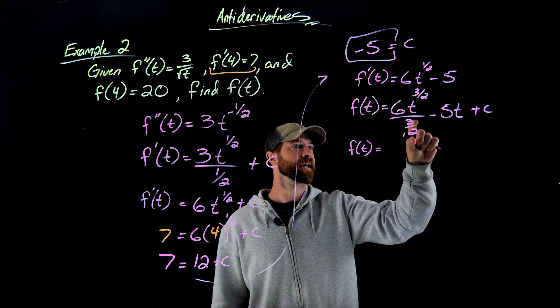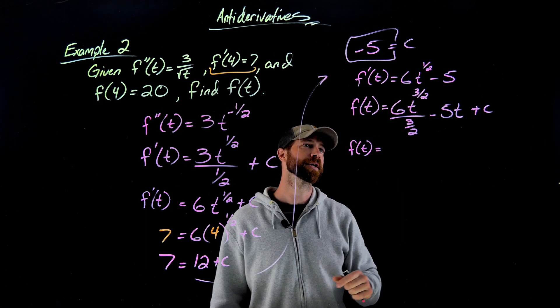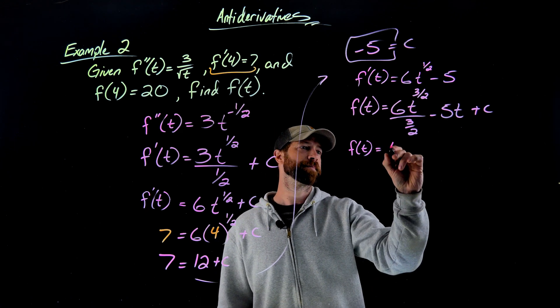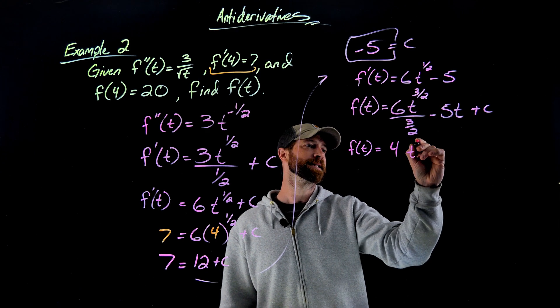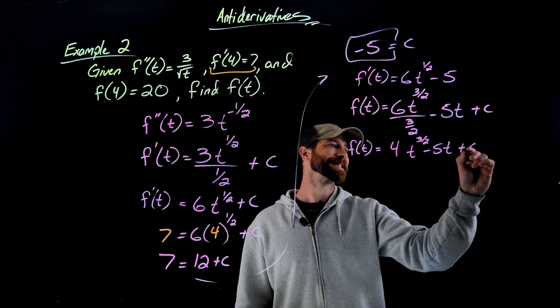Cleaning things up a little bit, this division of 3 halves is the same thing as multiplying by 2 thirds. 6 times 2 thirds ends up being a 4. And then this is t to the 3 halves minus 5t plus c.